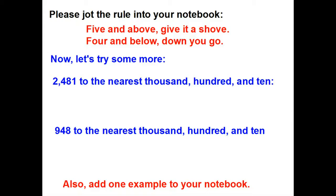Let's practice with a couple more. Let's take a look at 2,481 to the nearest thousand, hundred, and ten. Well, to the nearest thousand, I would need to underline my thousands place and look to the right. There's a four, four and below, down you go. So rounded to the nearest thousand, 2,481 is 2,000.